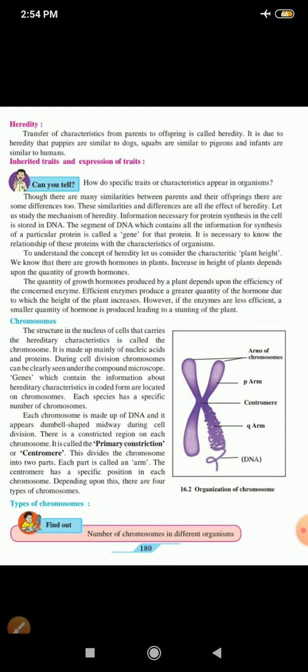Now, inherited traits and expression of traits. How do specific traits or characteristics appear in organisms? Traits means characteristics. Though there are many similarities between parents and their offsprings, there are some differences too. These similarities and differences are all the effect of heredity. Let us study the mechanism of heredity.